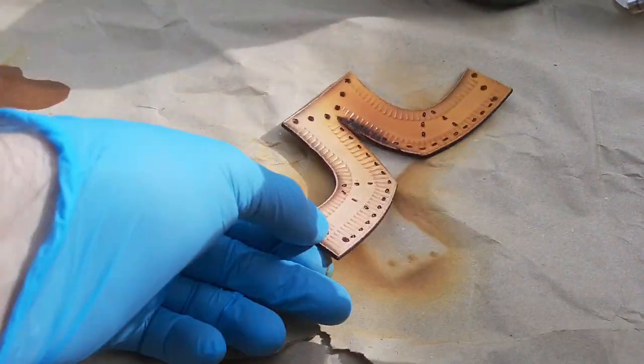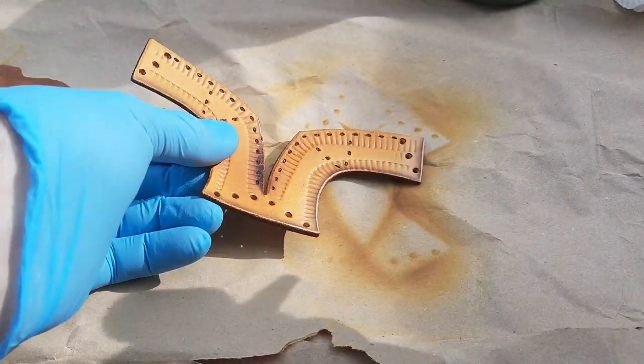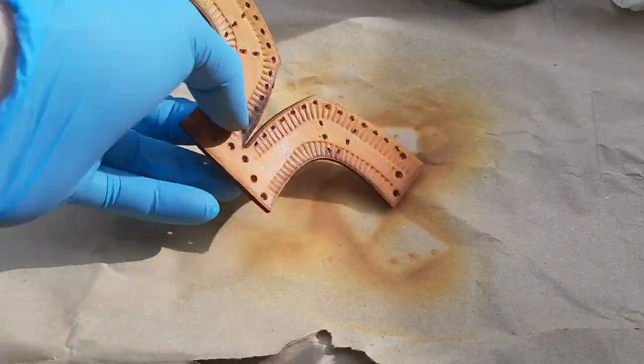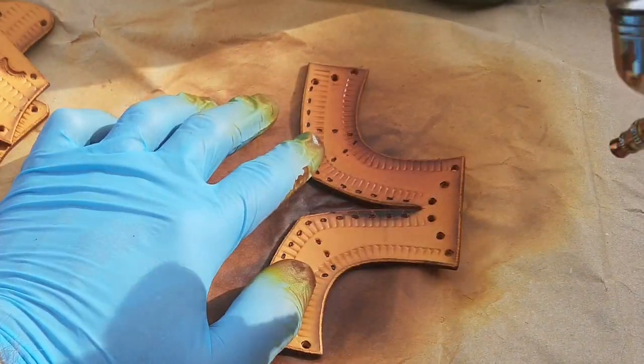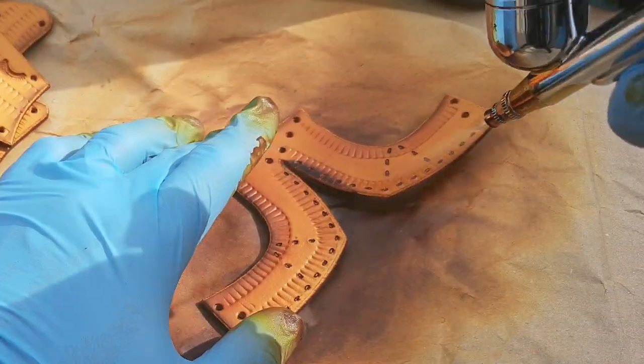For dyeing I use two coats of yellow as a base coat to achieve the color that I want and then I go along the edges with a dark chocolate brown.